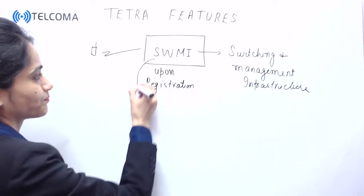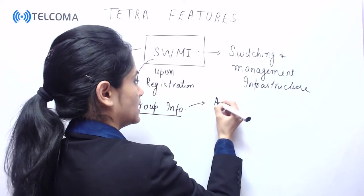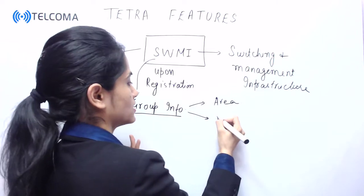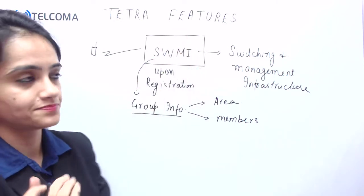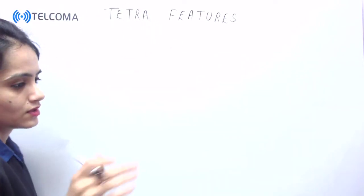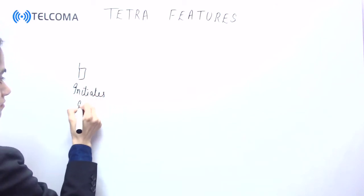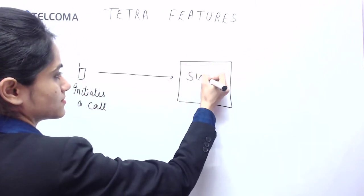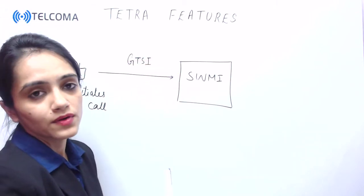The group information stored in SWMI includes the group area and the members within a particular group. Suppose a mobile initiates a call — the message has to be forwarded to SWMI along with the group information and the GTSI.